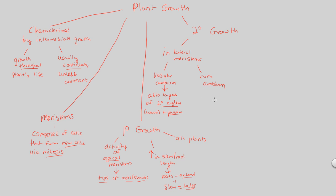If you have cork cambium growth, what you actually have is the replacement of a specific structure. Cork cambium lateral meristemic growth replaces the epidermis. In woody plants that undergo this, the epidermis is replaced with the periderm — a more advanced, structurally thicker overall structure. This is a much thicker and stronger replacement, representing a more advanced form of growth.